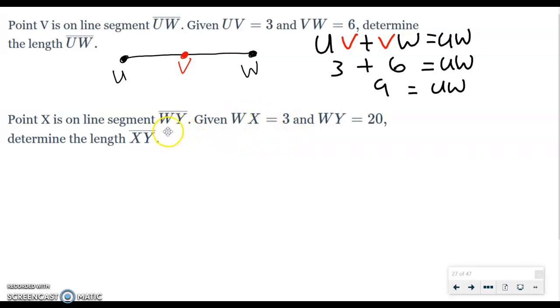So when you have WY with the line segment over it, it represents the line segment. When you have just WX, it represents the measurement of that line segment. Without the line over the letters, it just represents the value or the length of that line or angle or whatever. So we're going to start off by drawing WY, and we're going to put point X in the middle of it.